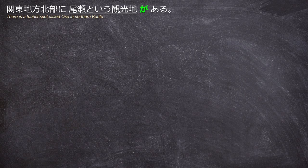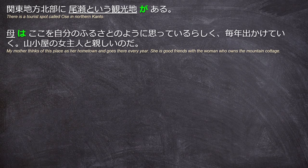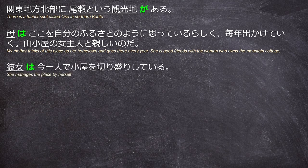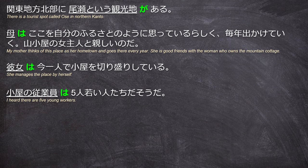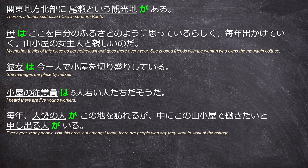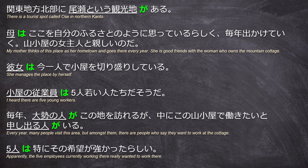関東地方北部にオセという観光地がある — There is a tourist spot called Osei in northern Kanto. 母はここを自分のふるさとのように思っているらしく毎年出かけていく。山小屋の女主人と親しいのだ — My mother thinks of this place as her hometown and goes there every year. She is good friends with the woman who owns the mountain cottage. 彼女は今一人で小屋を切り盛りしている — She manages the place by herself. 小屋の従業員は5人若い人たちだそうだ — I heard there are 5 young workers. 毎年大勢の人がこの地を訪れるが、中にこの山小屋で働きたいと申し出る人がいる — Every year many people visit this area, but amongst them there are people who say they want to work at the cottage. 5人は特にその希望が強かったらしい — Apparently the 5 employees currently working there really wanted to work there.